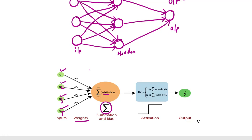We compute w1*x1 + w2*x2 + w3*x3 plus the bias value. Finally we get a result value. If this value is greater than 0, the answer is 1. If the value is less than 0, the answer is 0.